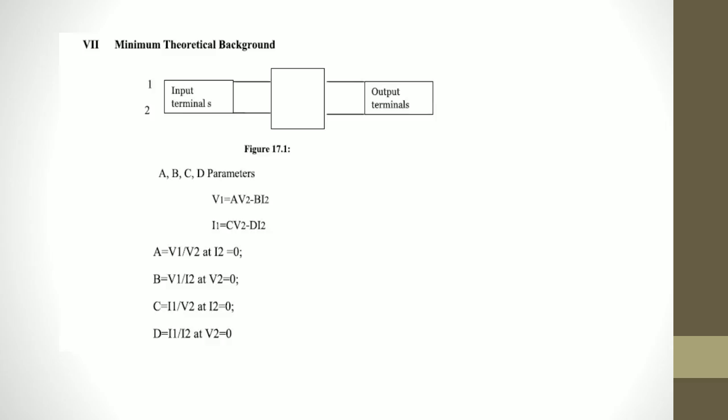So, we have to find out the voltage and current, voltage at input and current at input, V1 and I1. So, V1 is equal to A V2 minus B I2, and I1 is equal to C V2 minus B I2.